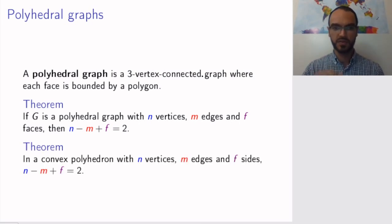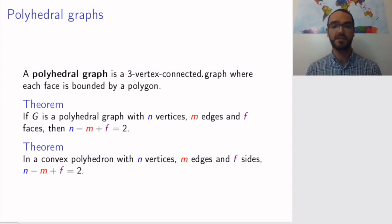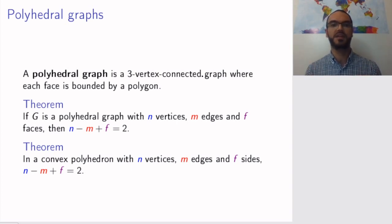If you want to write this specifically in terms of the polyhedron itself, this says that if you have a convex polyhedron with n vertices, m edges and f sides, then n minus m plus f is equal to 2 — which is probably the more classically known version of Euler's formula.